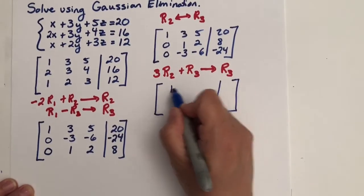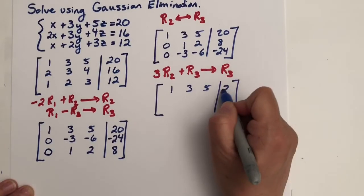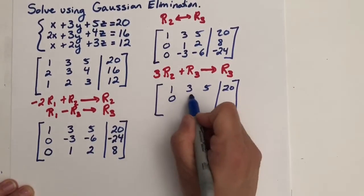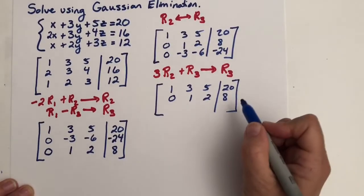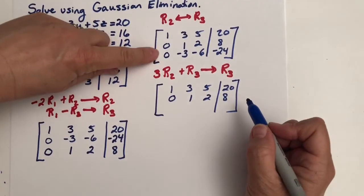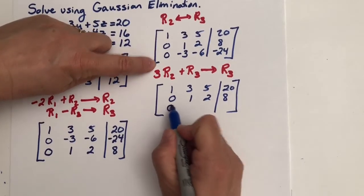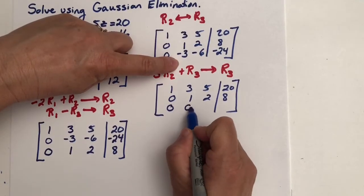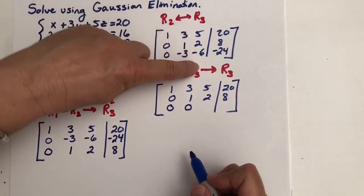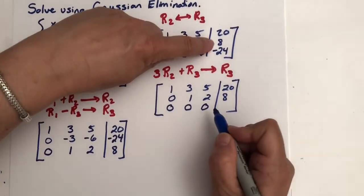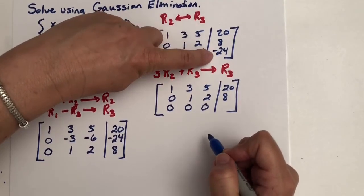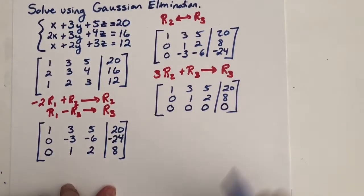We have our 1, 3, 5, 20. 0, 1, 2, 8. And we're multiplying by 3 and adding. That gives us a 0 here and it gives us a 0 here. But let's take care here. 3 times 2 is 6 plus negative 6, oh, another 0. 3 times 8 is 24 plus negative 24. And we have a 0 here.